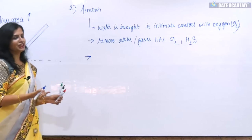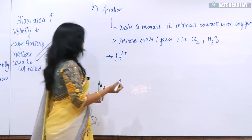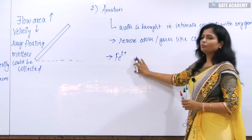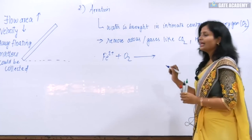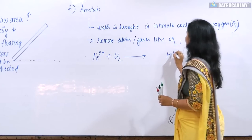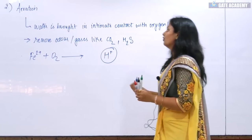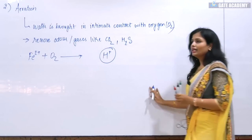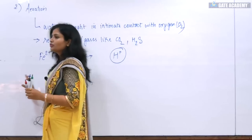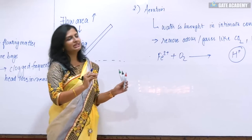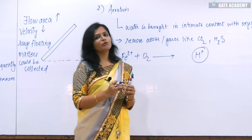Similarly, with the help of aeration, Fe2+ ions could be removed. When we give oxygen to Fe2+ ions, they generate H+ ions. It precipitates, but it also gives H+ ions, because of which the concentration of H+ increases and naturally the acidity of water will increase. In aeration, it removes odour gases and metallic compounds like Fe2+. There are various aerators by which we can provide aeration.